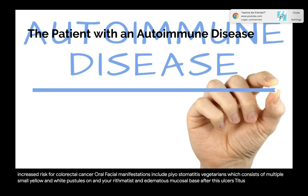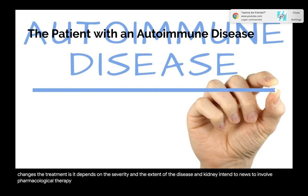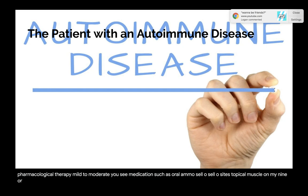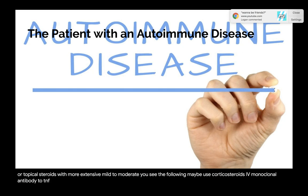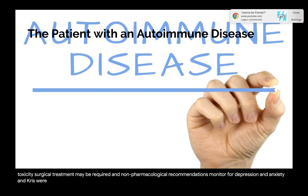Treatment of UC depends on the severity and extent of the disease. For mild to moderate UC, medications such as oral aminosalicylates, topical mesalamine, or topical steroids may be used. With more extensive mild to moderate UC, corticosteroids, IV monoclonal antibody to TNF may be used. For severe UC, IV steroids and colectomy may be necessary if pharmacological approaches fail or if the patient experiences toxicity. Non-pharmacological recommendations include monitoring for depression and anxiety and screening for increased risk of cancers, including colon, cervical, melanoma, and non-melanoma.